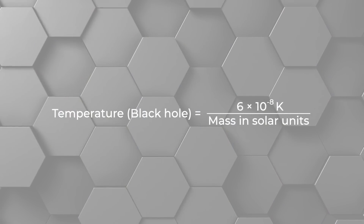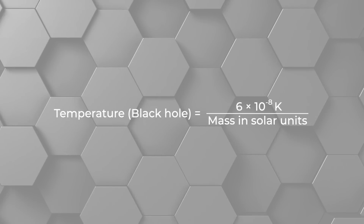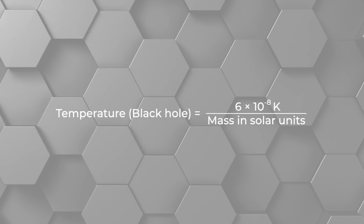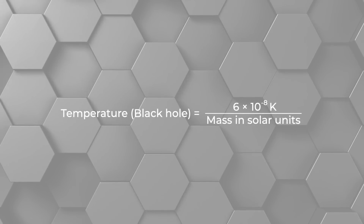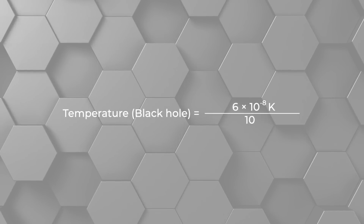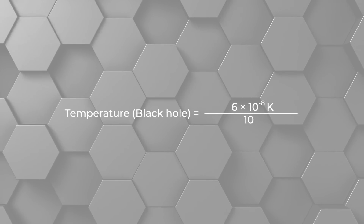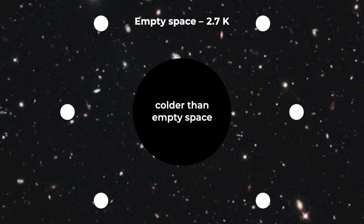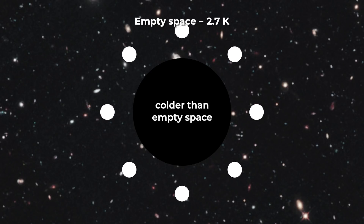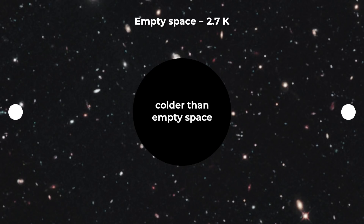If black holes radiate energy, then they must have a temperature. The temperature for a non-rotating, electrically neutral black hole is equal to 6 times 10 to the minus 8 Kelvin divided by the mass of the black hole in units of solar mass. For example, for a black hole with 10 times the mass of the sun, you divide that number by 10. That's a crazy small temperature. The temperature of space is 2.7 Kelvin, which is the remnant temperature of the Big Bang.